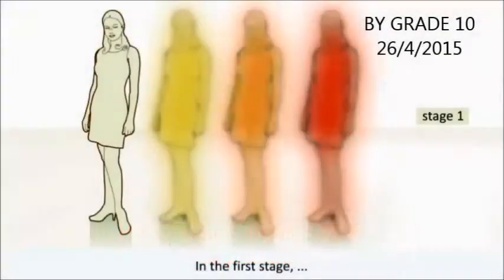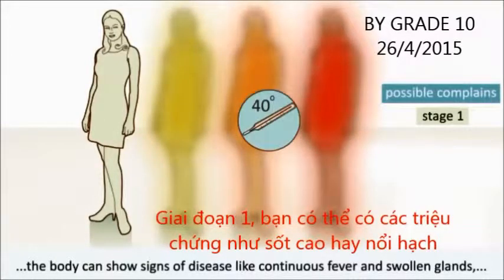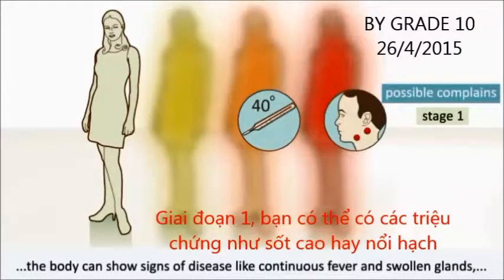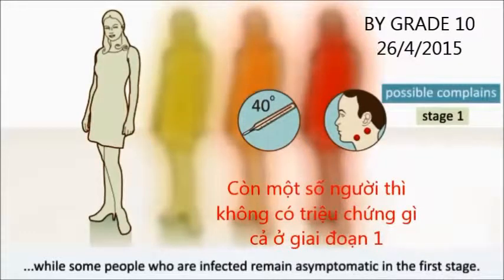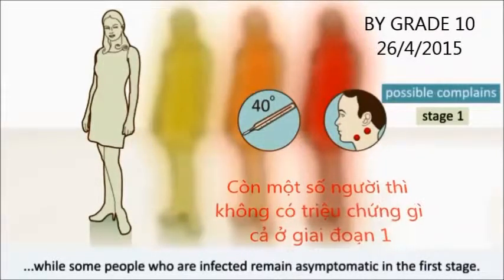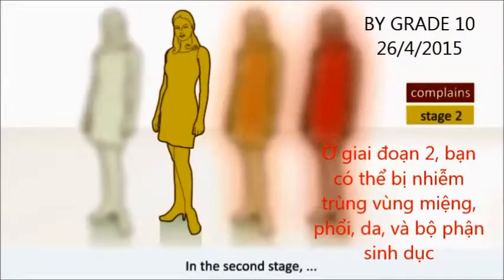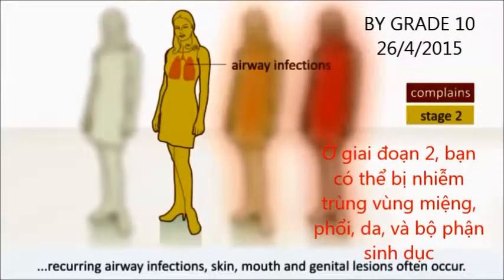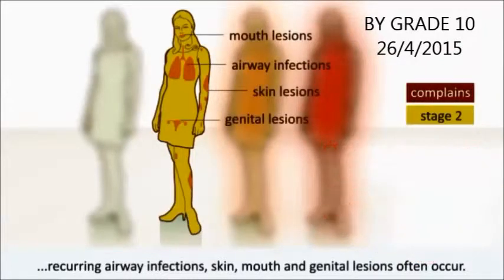The infection passes through four stages. In the first stage, the body can show signs of disease like continuous fever and swollen glands, while some people who are infected remain asymptomatic in their first stage. In the second stage, recurring airway infections, skin, mouth, and genital lesions often occur.